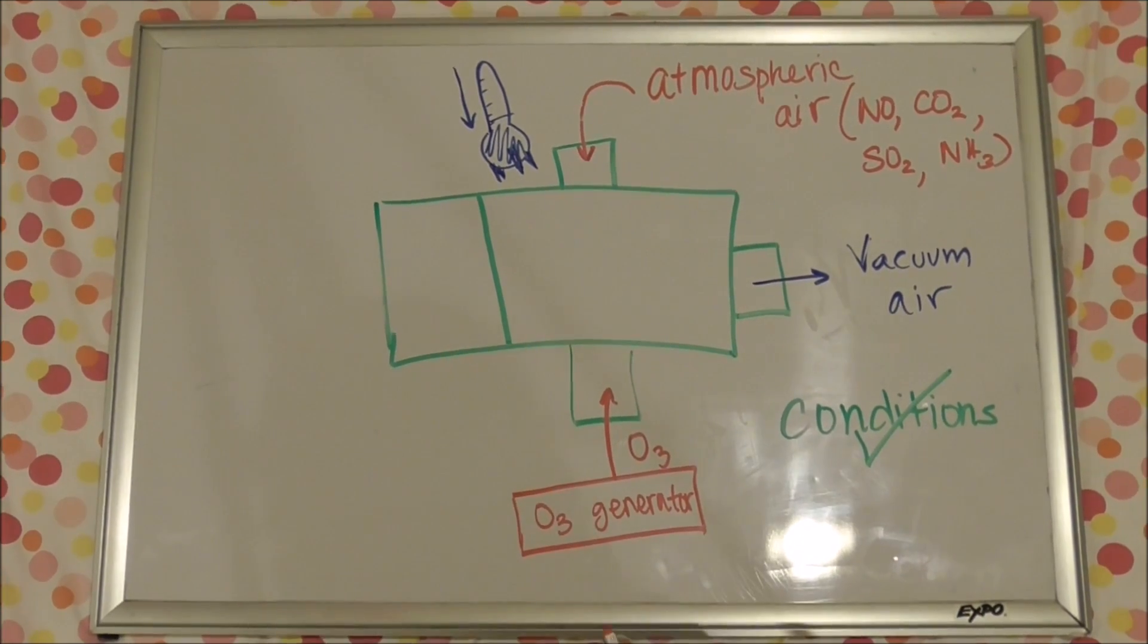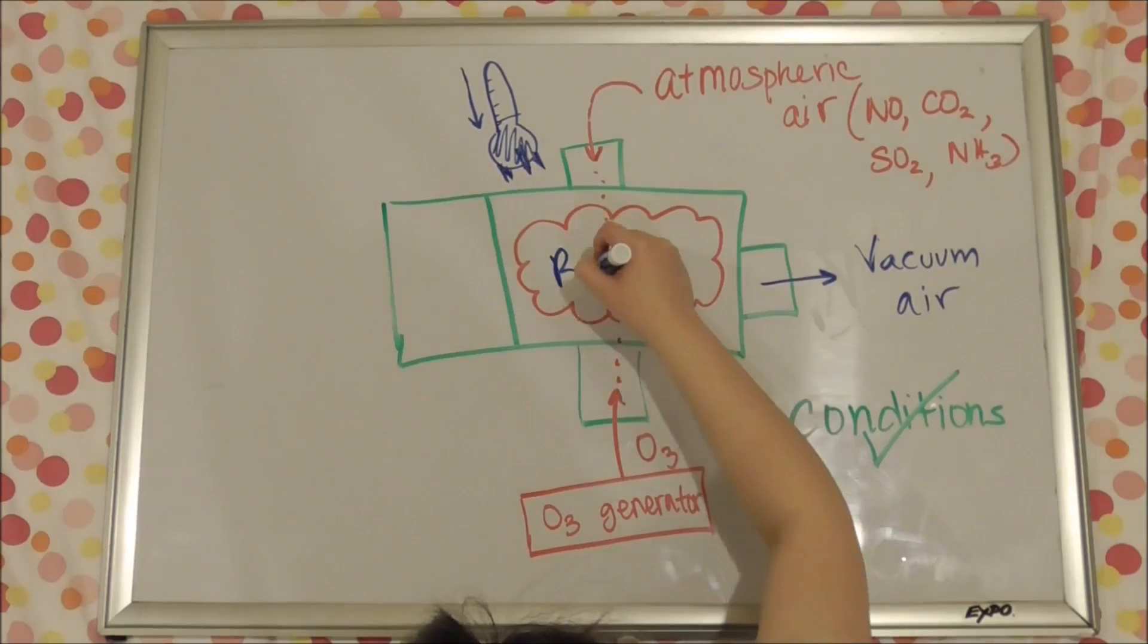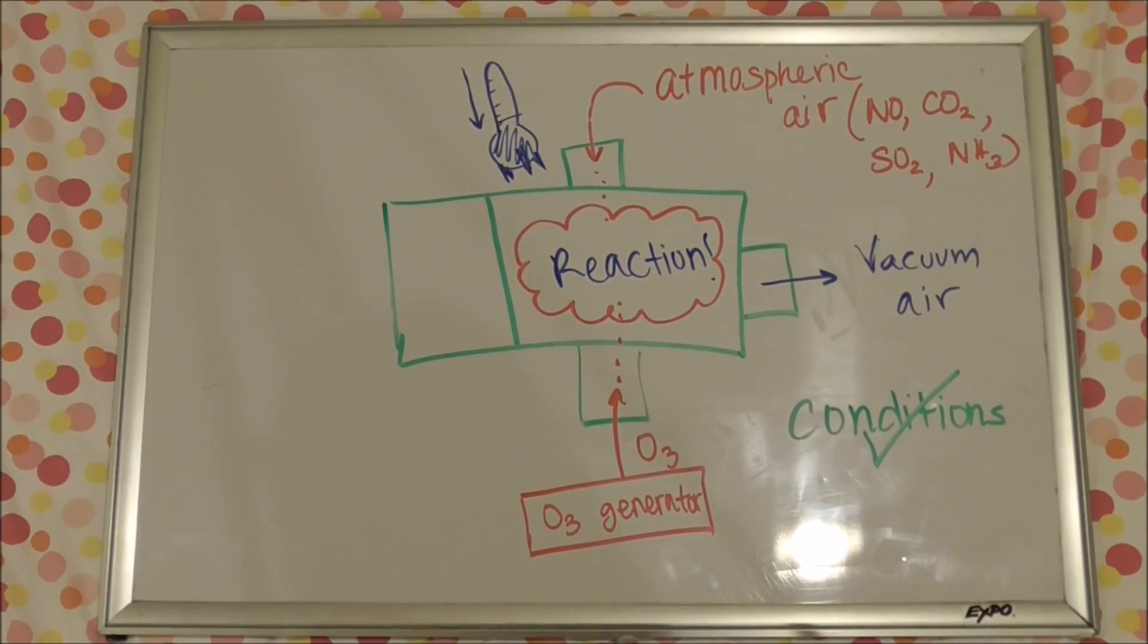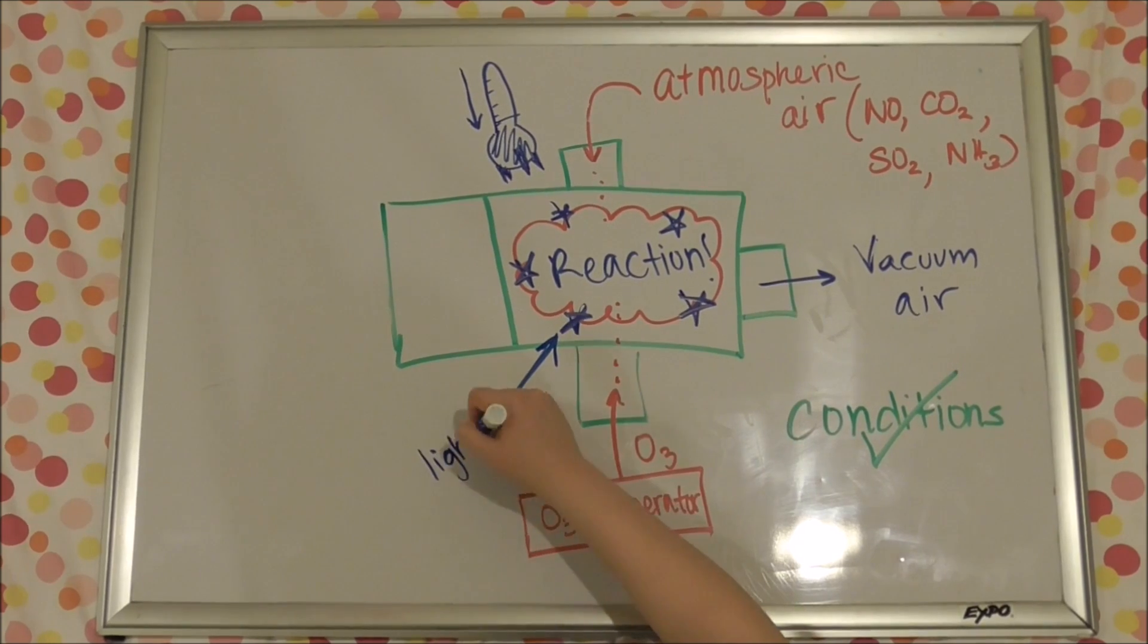What happens next is basically the O3 flows in and the atmospheric air flows in. And in the reaction chamber, the NO reacts with the O3 in order to create NO2 in an excited state, which will also produce light later.